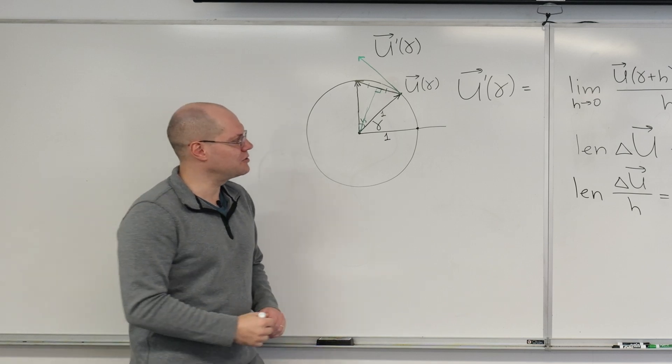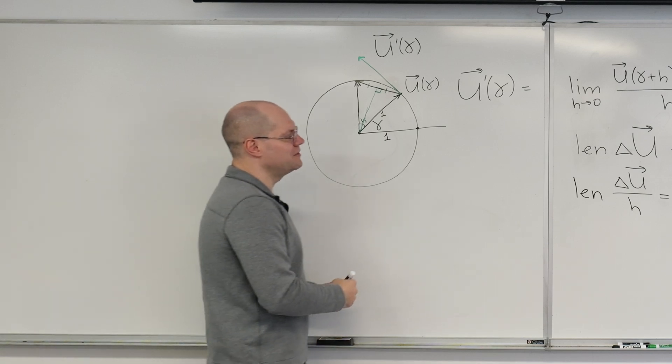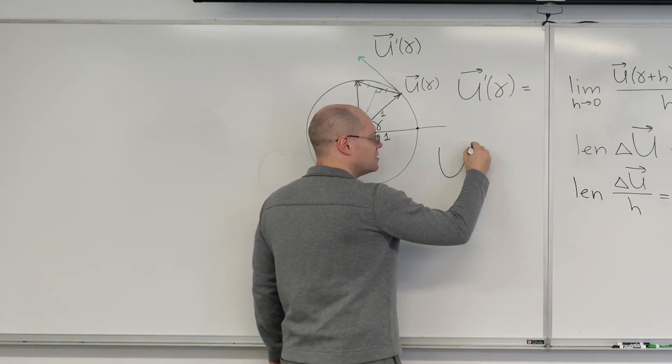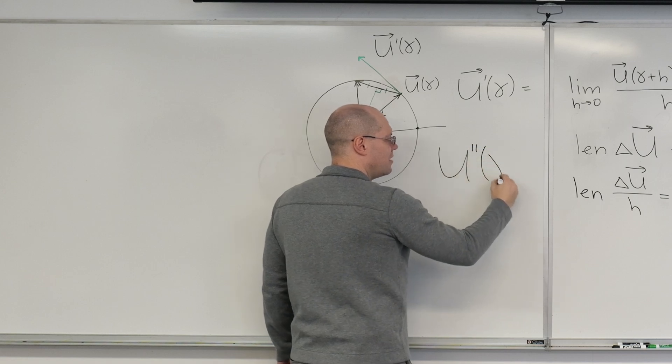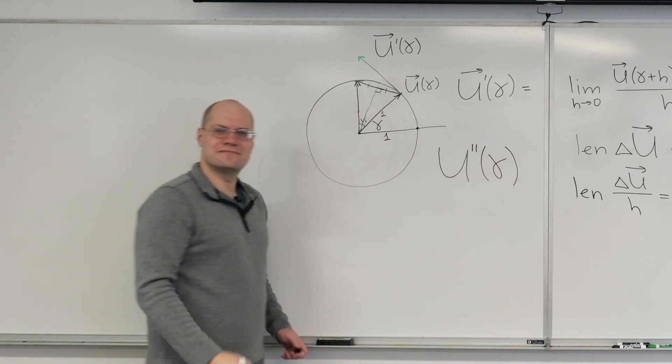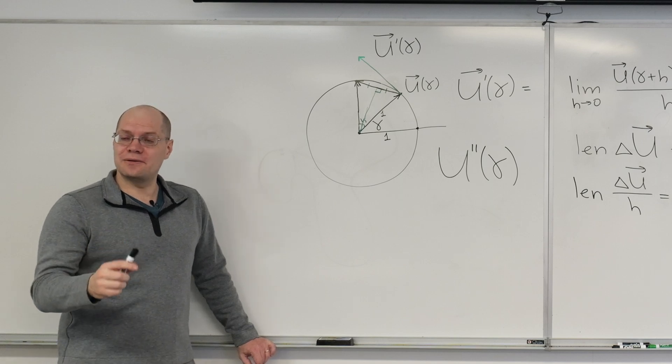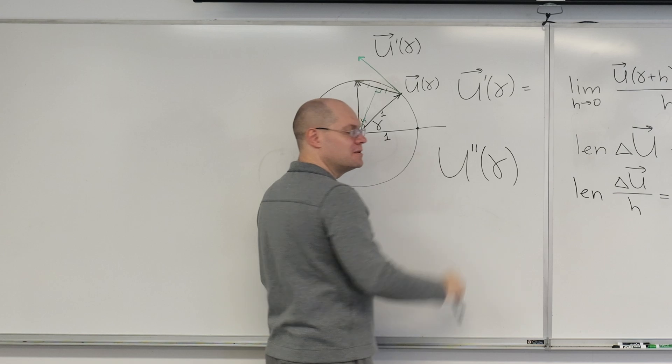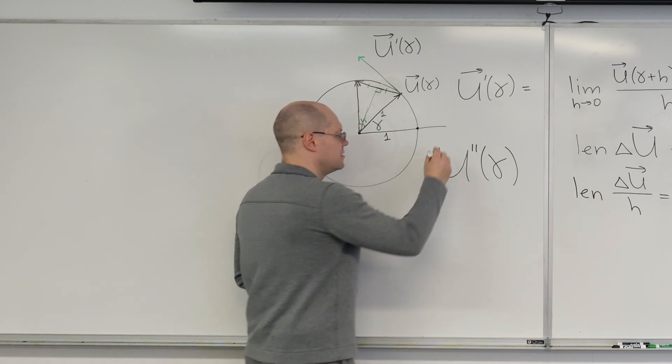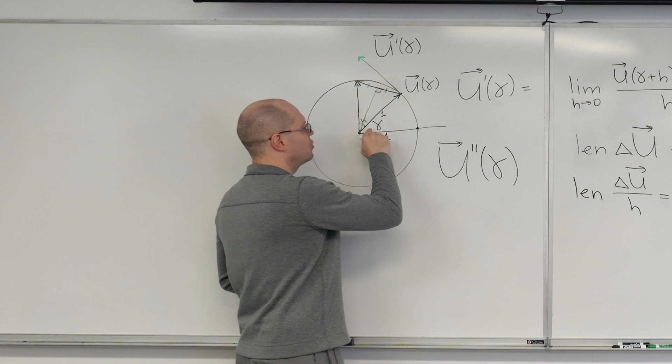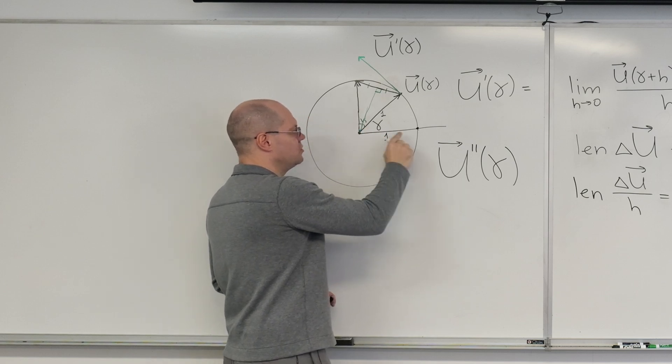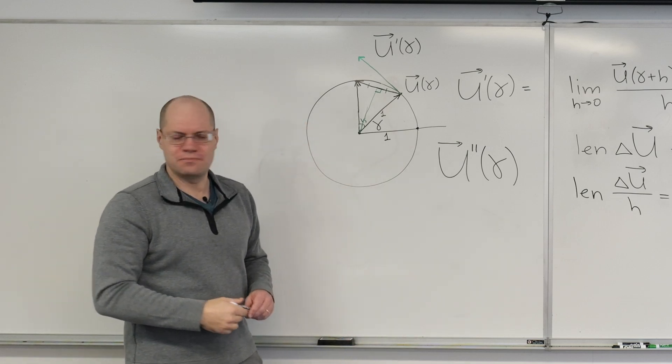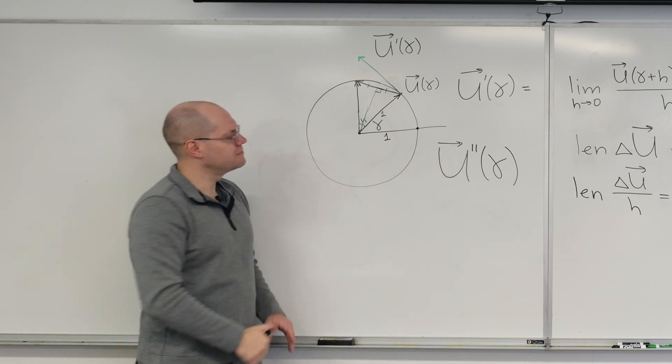But now you can also answer the question. And there would be a couple of interesting things that we could do here. What do you think U double prime of gamma is? That's my question number one. And question number two will be U prime and U double prime of gamma. This means second derivative, by the way. If the circle is not unit radius, if it's not a unit circle, but if it's a circle of radius R, more general. But first, let's answer this question.